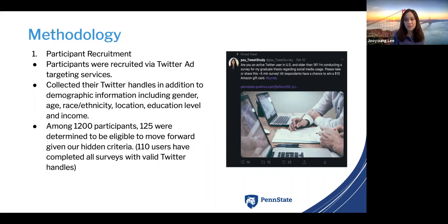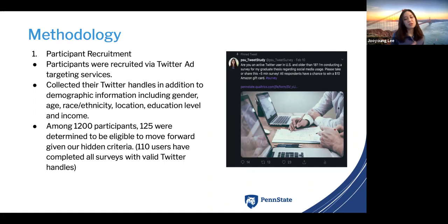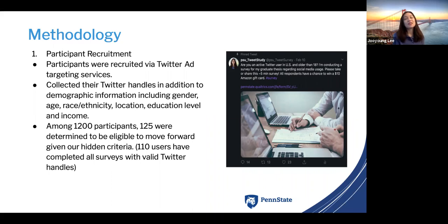Among 1,200 participants, 125 users were determined to be eligible to move forward given our hidden criteria. The reason we imposed these criteria is to make sure the users participating in our survey are actually active Twitter users who could represent the overall population of Twitter. For instance, those who didn't have their account for more than one month, or who didn't post at least 10 tweets in the last month, were excluded because we decided they were not eligible to represent active Twitter users.